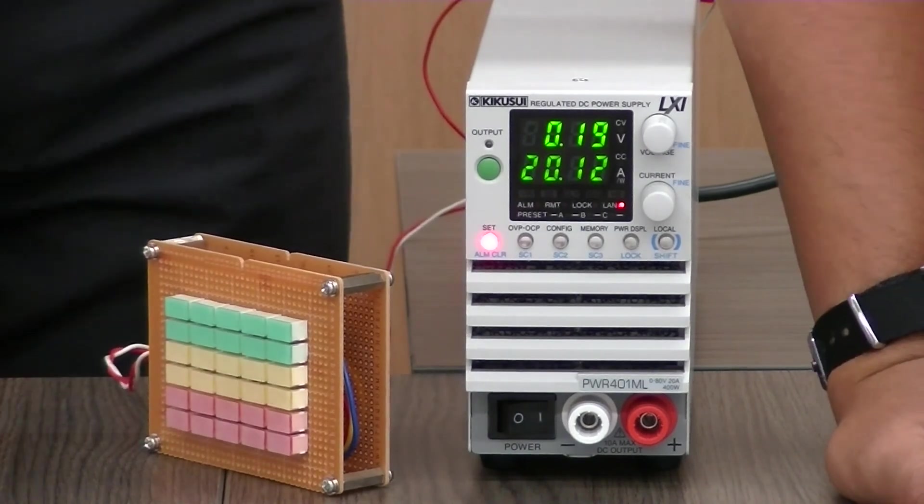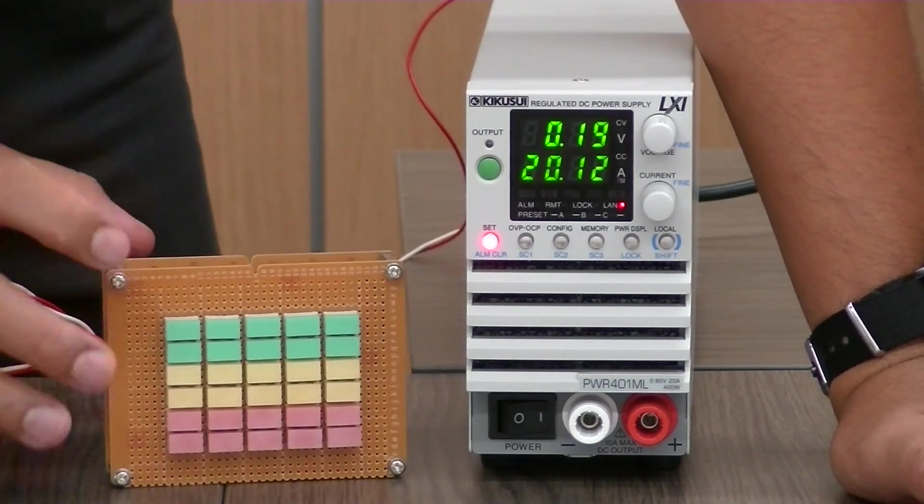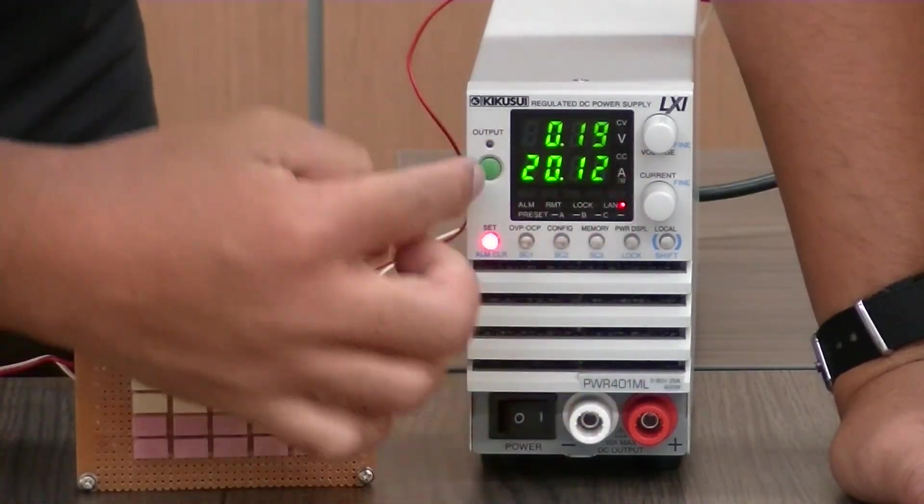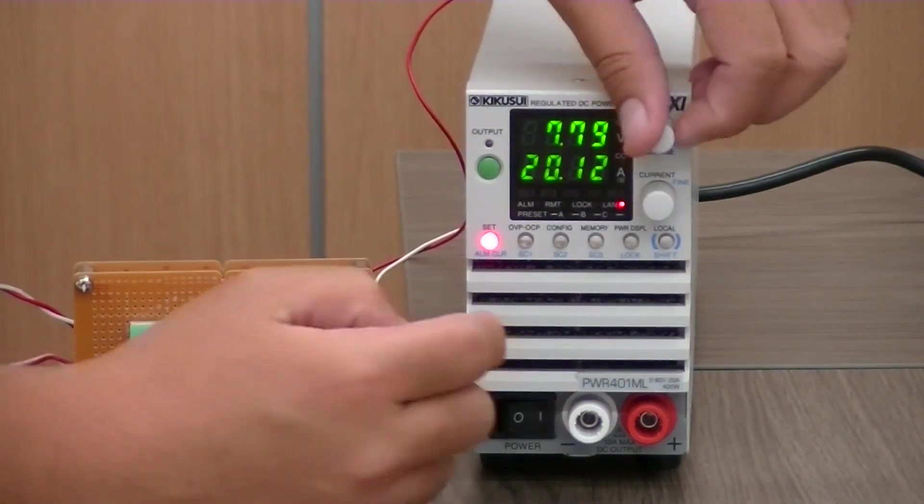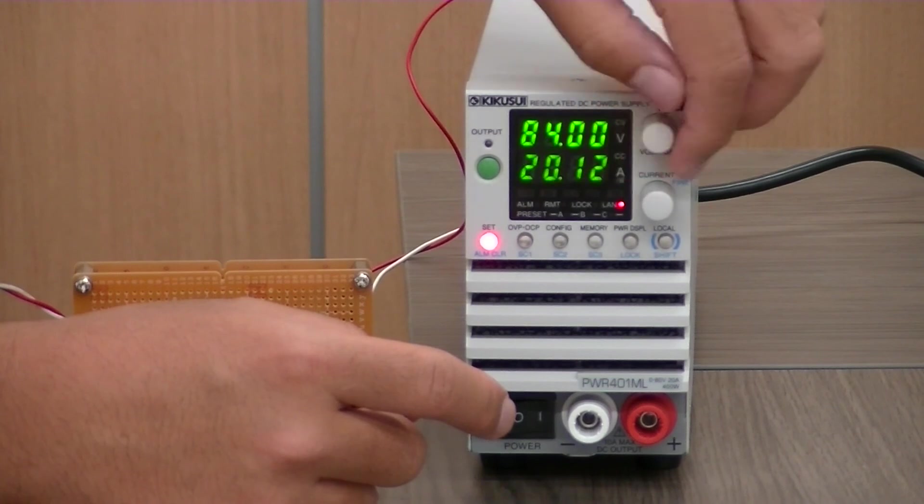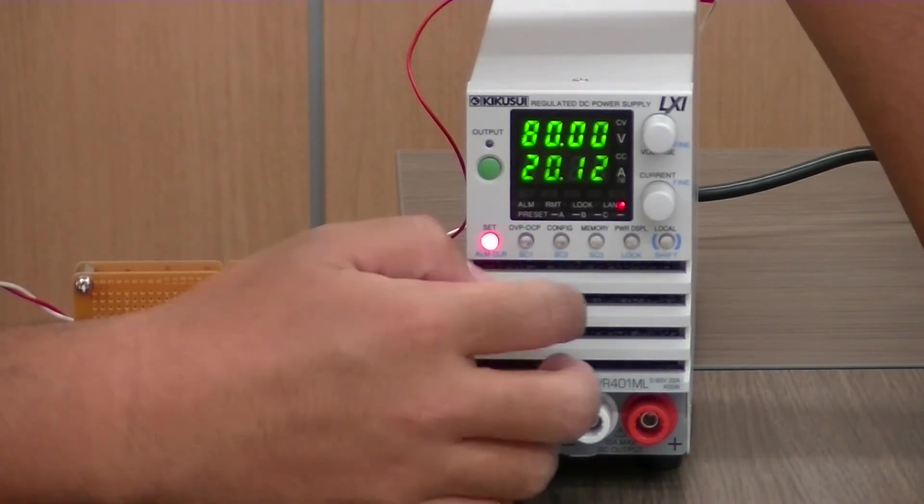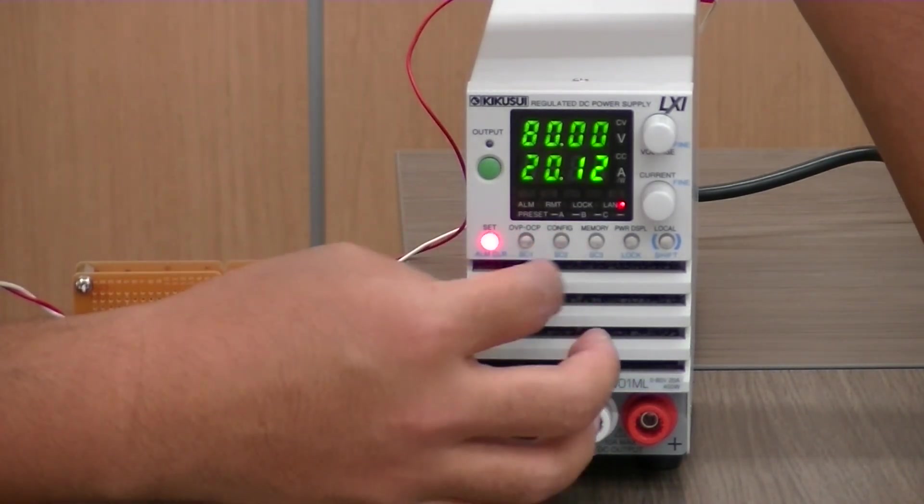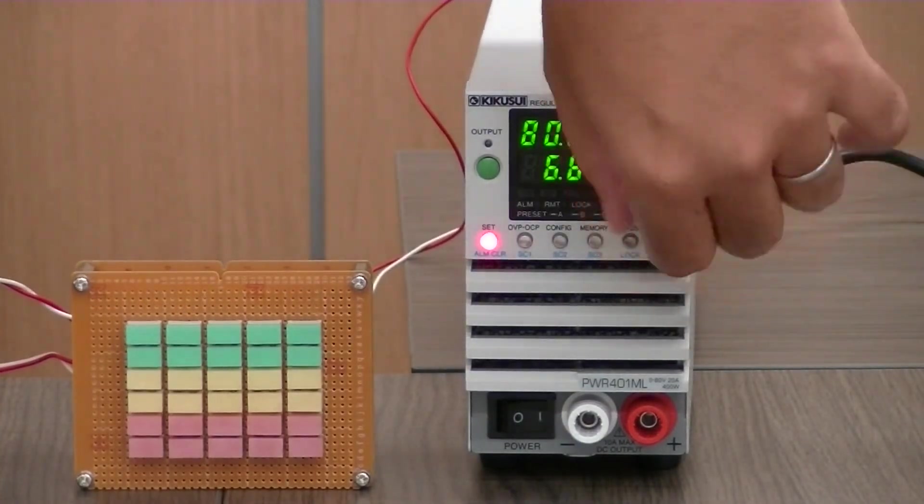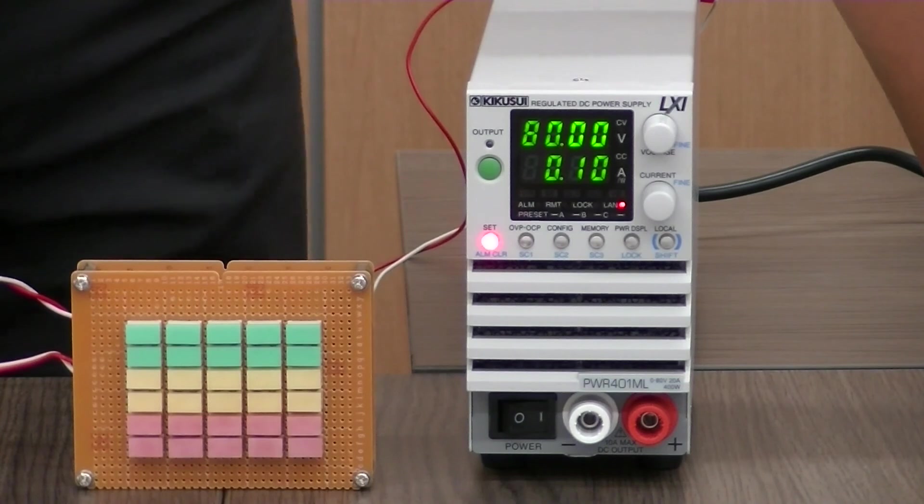So let's set and do a simple test with the LED. So I am going to set the voltage now, I am going to set it to 80V. And current, because this is a small duty, so I will just make it like 0.1mA.